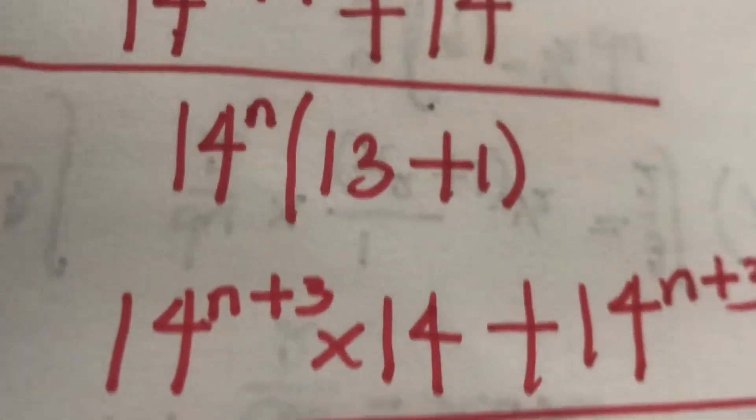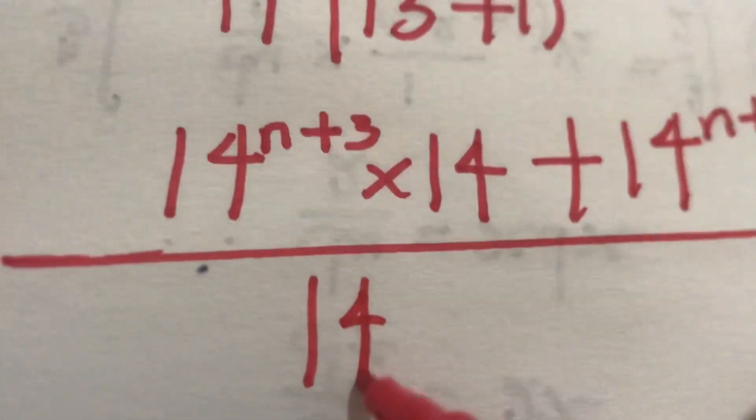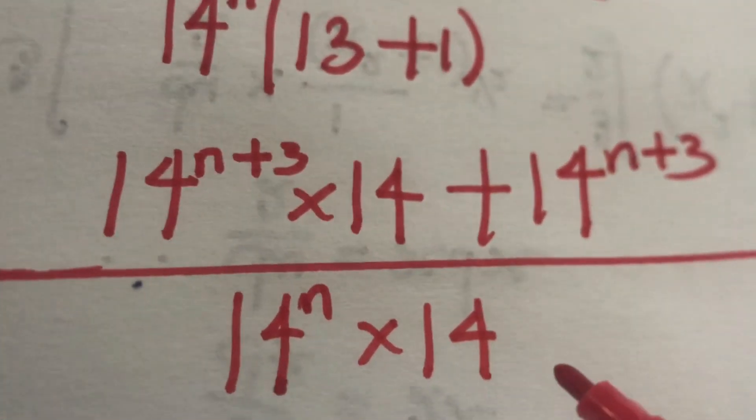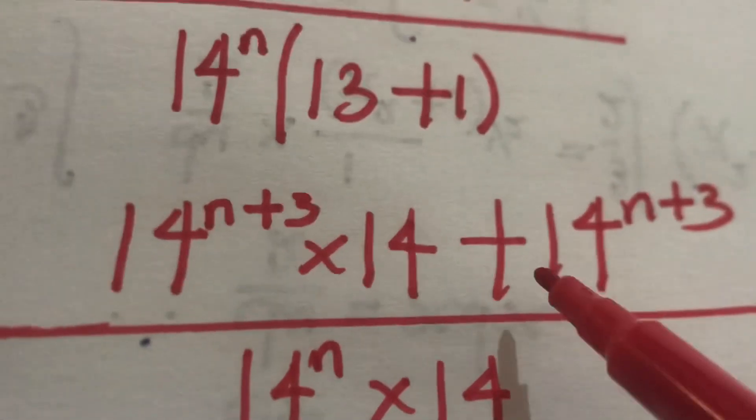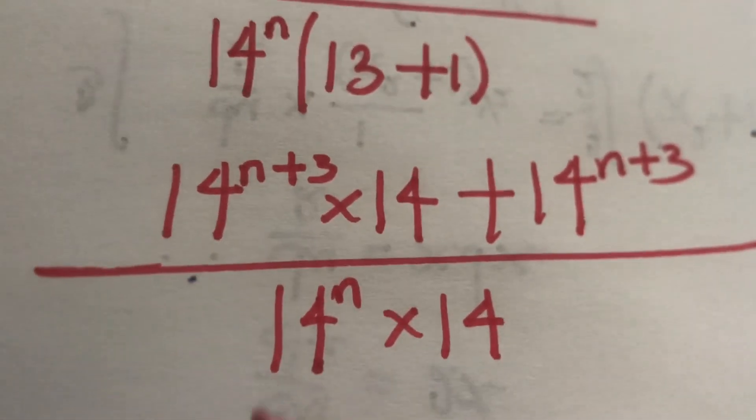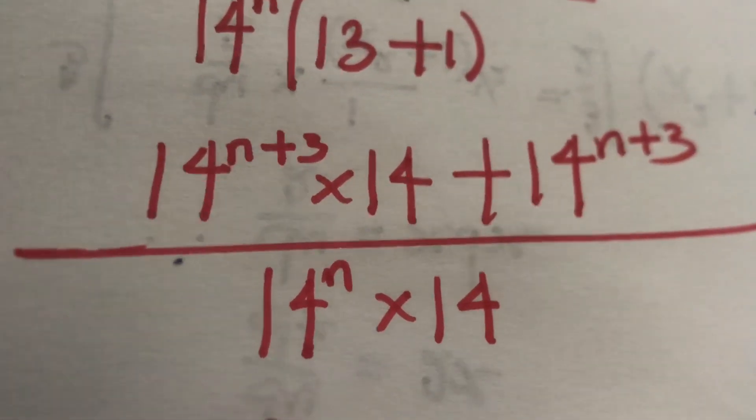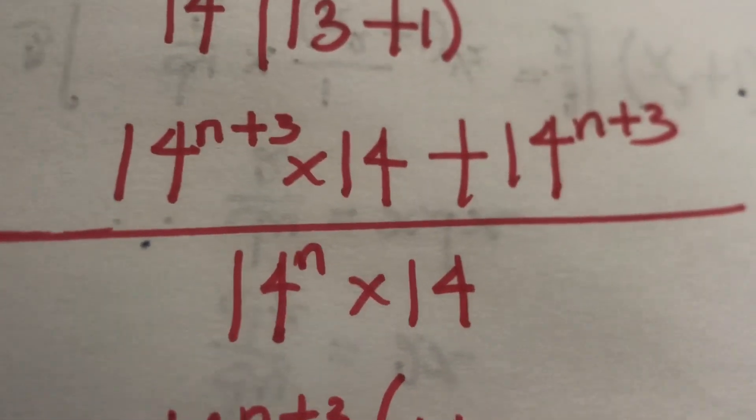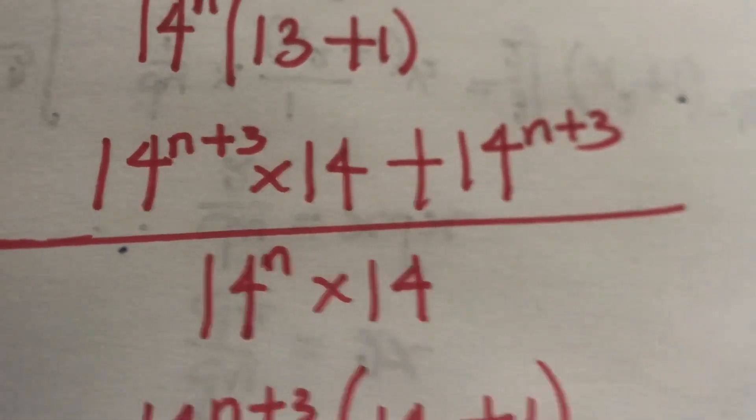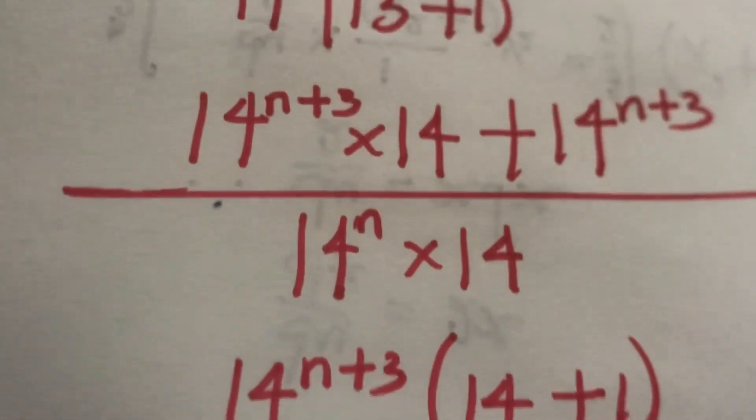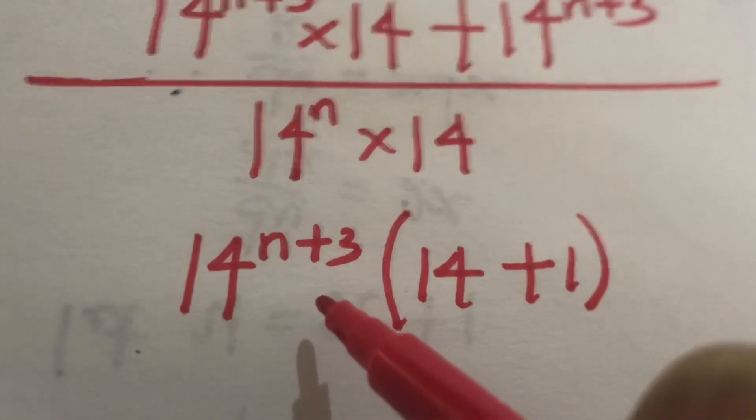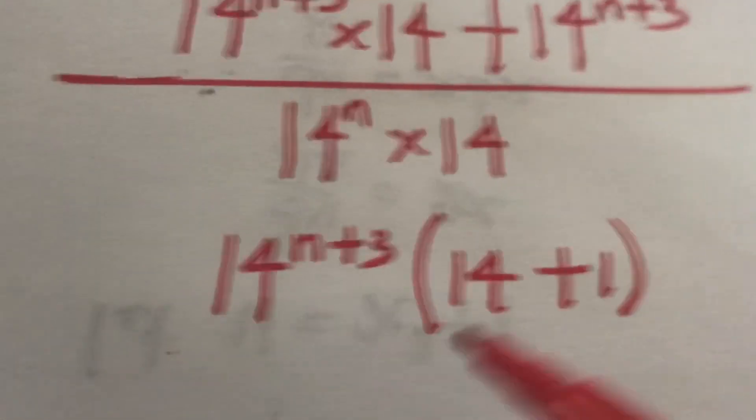All over 14 to the power n times 14. For that we can factorize in our numerator. That will give us 14 to the power n plus 3 in bracket of 14 in bracket times 1 plus 1.